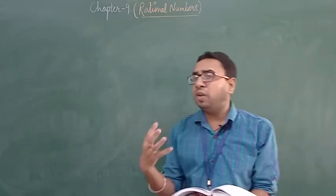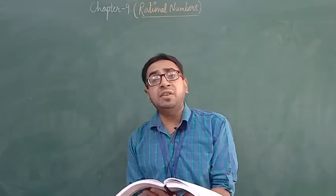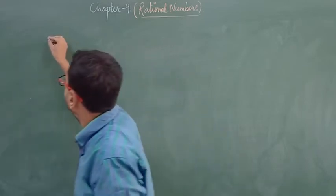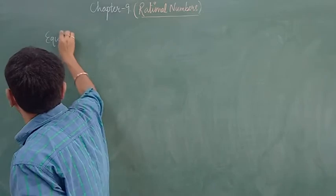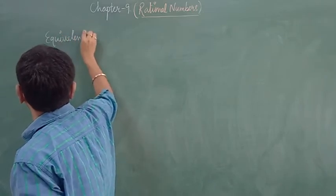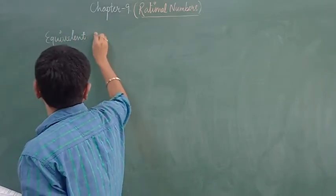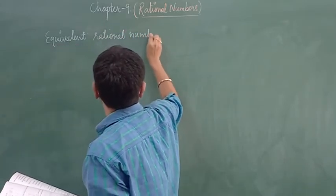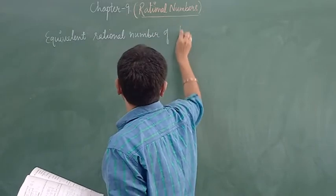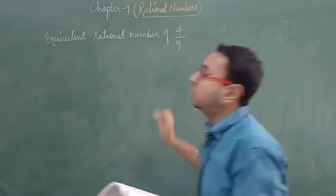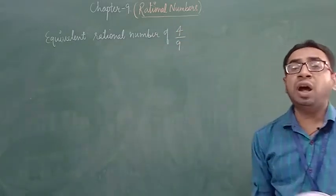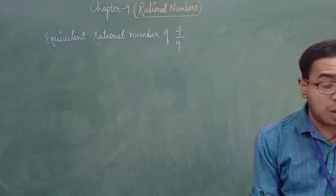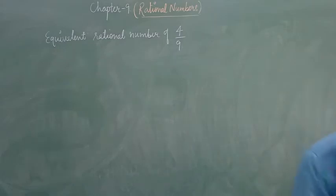Whenever you have to find the equivalent of any rational number or any fraction, the rule is very simple. Just keep on multiplying this rational number with various non-zero same numbers.